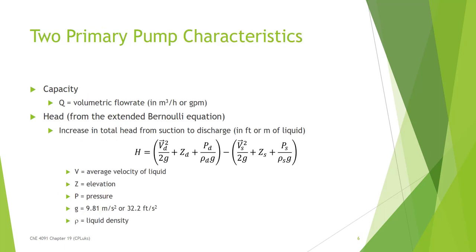There are a lot of pump characteristics that make a difference, but the two most important are capacity and head. Capacity is the volumetric flow rate, normally in gallons per minute or cubic meters per hour for a compressor. Head comes from that extended Bernoulli equation, and it looks at the change from the suction side to the discharge side of the pump.